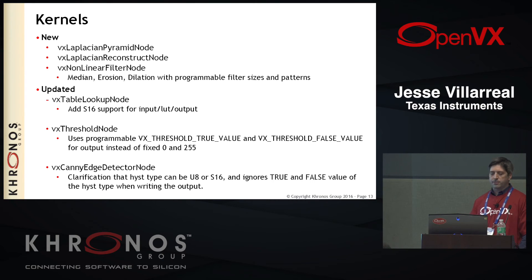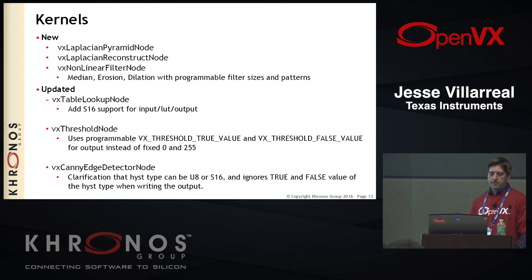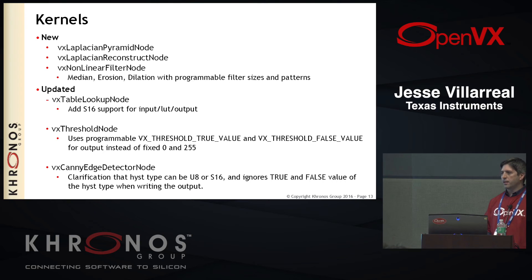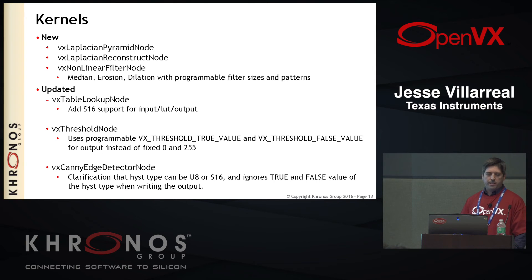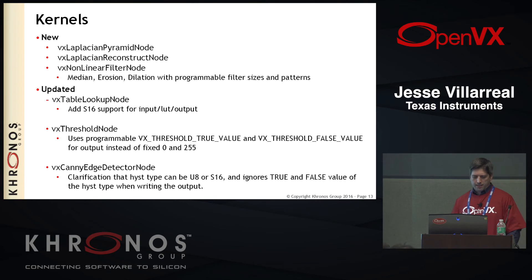In terms of the existing kernels, there have been some minor updates. For example, for the lookup table, we've added S16 support — before it was only U8 support. For the threshold node, although we had the attributes for true value and false value, the specification was saying the outputs are always zero or 255. Now you can program what the outputs are — you can decide what is the true value and what is the false value for the output and use those attributes. In the Canny edge detector, I also did some clarifying about what data types can be used.